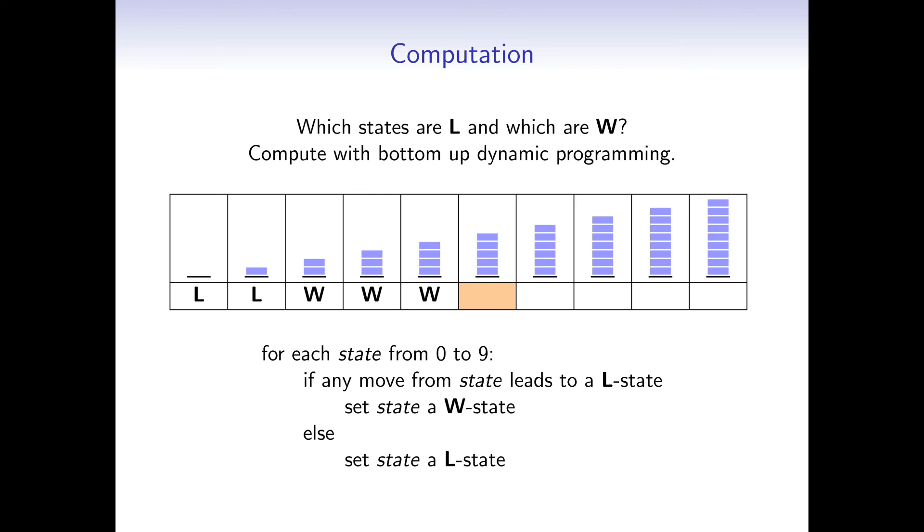From the pile with 5 blocks, we can only reach winning states. Therefore, this is a losing state. The same thing goes for the pile with 6 blocks. And we repeat the process for the piles with 7, 8 and 9 blocks.